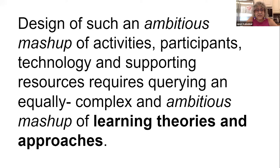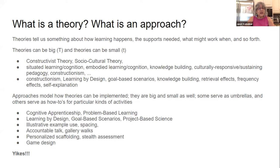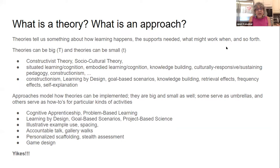And if you are designing ambitious mashups, then you might imagine that you also have to be just as ambitious in mashing up learning theories and approaches — mashing up lots of different things from the research on how people learn and on how to support their learning. So what is a learning theory? What is an approach? There are lots of different kinds of theories. When theories turn into ways of doing things, it kind of looks more like an approach. I don't want you to think that theories mean something pie in the sky. Theories tell us something about how learning happens, the supports needed, what might work when. Approaches are the how-to's of supporting learning or designing learning environments.